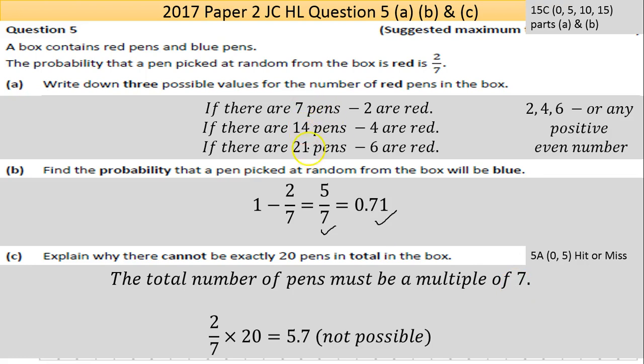So these are all 7, 14, 21. That's why I used the example of 63 which is a multiple of 7 earlier. So I said there mathematically 2/7 times 20 gives you 5.7. That's not possible to have 0.7 of a pen. I took that from the marking scheme. You might want to be a bit more clear in stating that you can't have 0.7 of a pen. It just makes sense. That's part C.